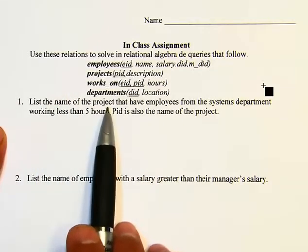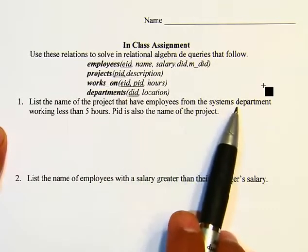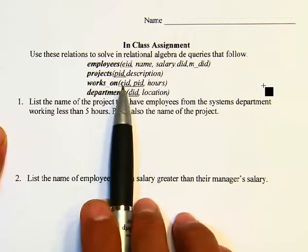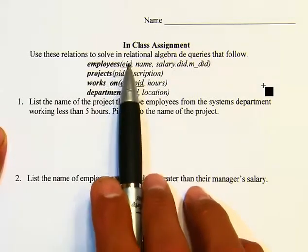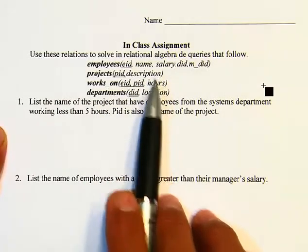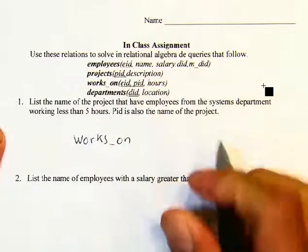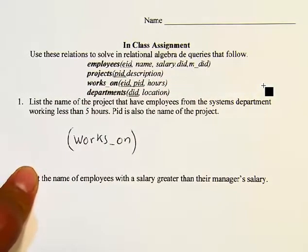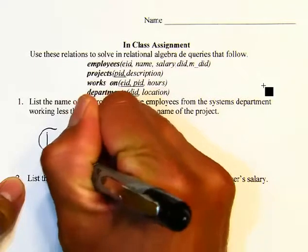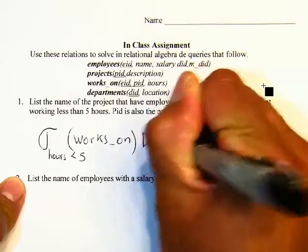For the first query, we want the name of projects that have employees from the systems department working less than five hours. We need two tables: employees and works_on. From works_on we select those with hours less than five, and then we join this with employees.